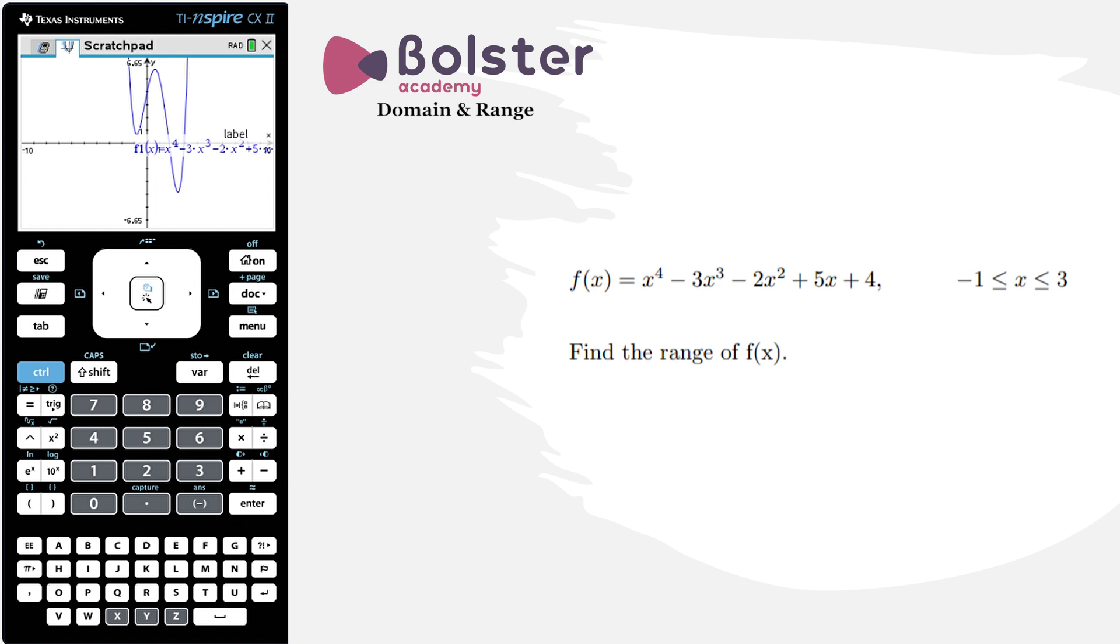There's the graph of the function we're dealing with. I'm going to move the equation out of the way so we can better see it. We're asked to find the range between x equals minus 1 and 3. Remember, this function is only defined between those values. To give us visually a better idea, I'm going to go into menu and graph these two boundaries.